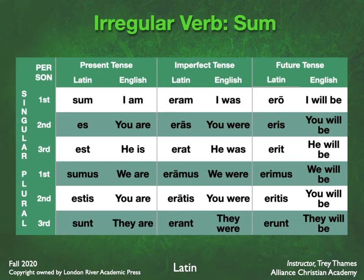In the imperfect, it's eram, eras, erat, eramus, eratis, erant, translated as: I was, you were, he was, we were, you were, they were. In the future tense, it's ero, eris, erit, erimus, eritis, erunt, translated as: I will be, you will be, he will be, we will be, you will be, they will be. You may have already learned this last year, but if it is new, you should be able to learn it fairly quickly — just memorize those chants and the translations.